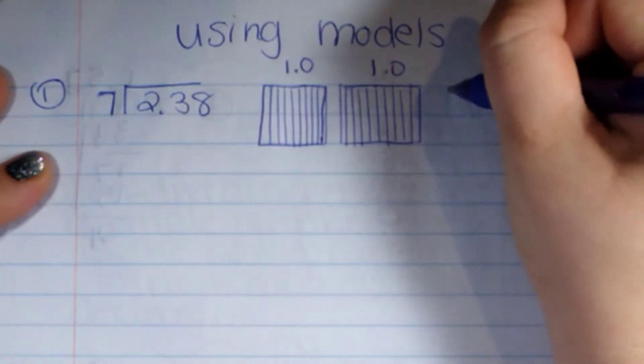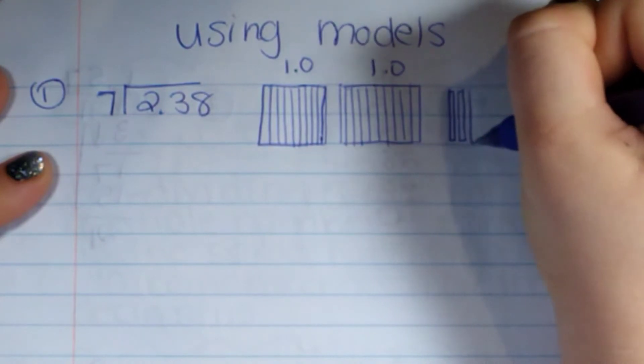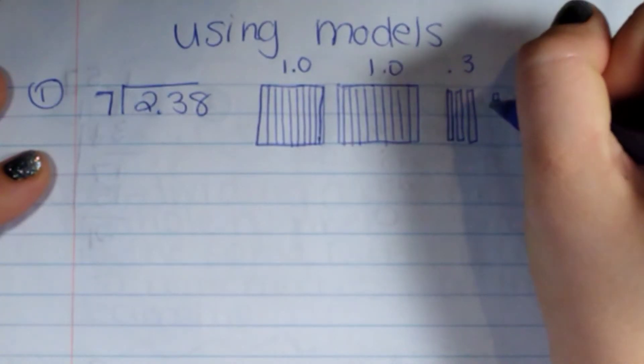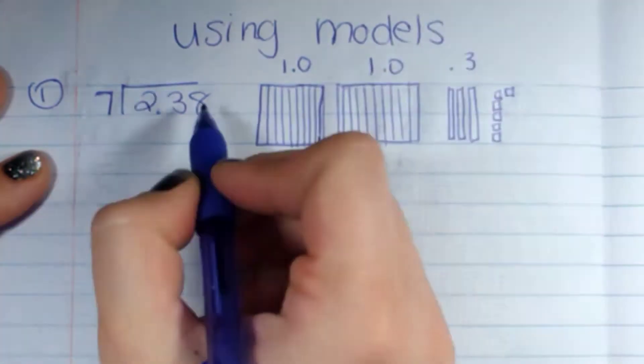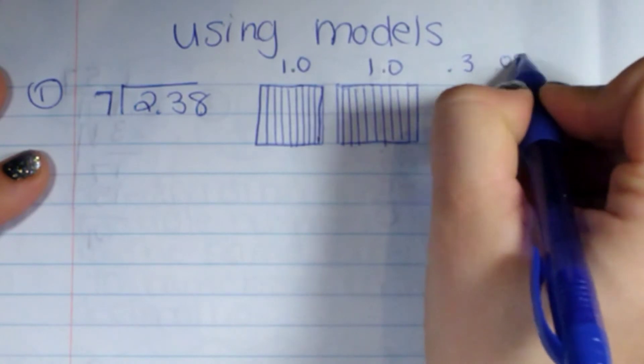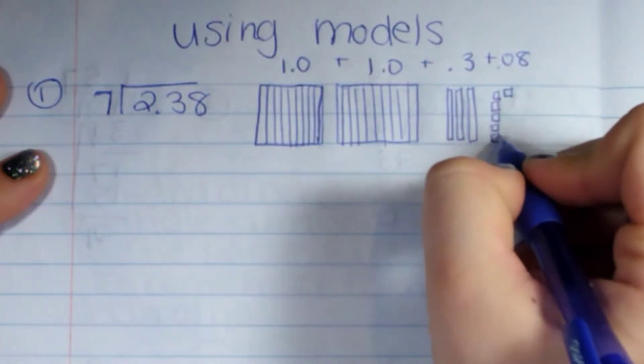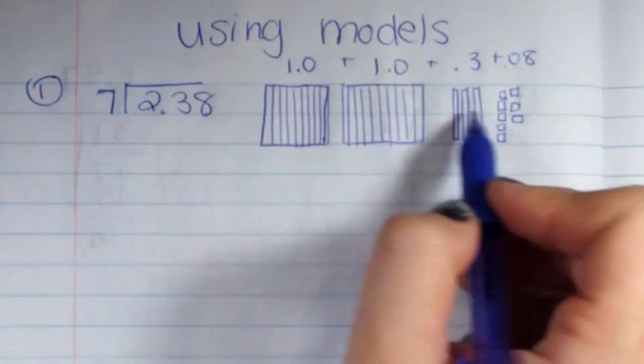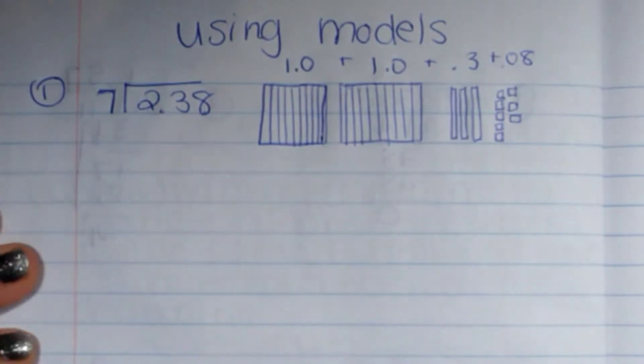Now I have to do three tenths, and then I have to do the little tiny pieces that make up these tenths. I have to make sure I have eight. Seven, eight. So basically this is modeled out, two and thirty-eight hundredths.